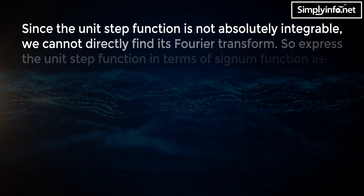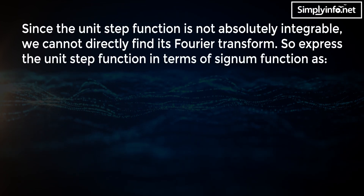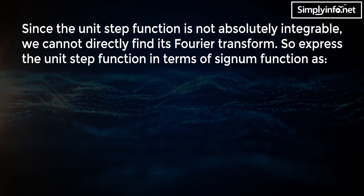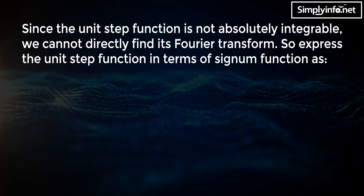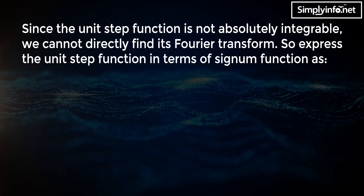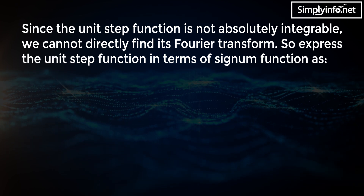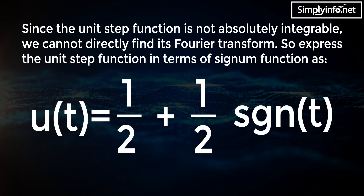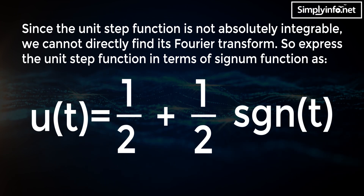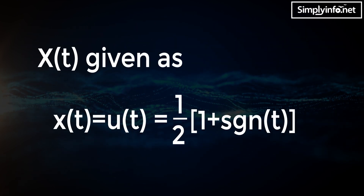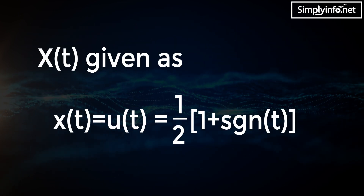Since the unit step function is not absolutely integrable, we cannot directly find its Fourier transform. So we express the unit step function in terms of the signum function as u(t) equals 1/2 plus 1/2 times sgn(t). Therefore x(t) equals u(t) equals 1/2 into (1 plus sgn(t)).